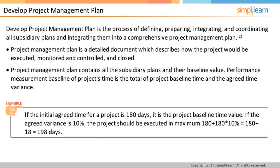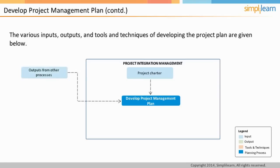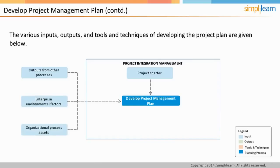Let us look at the inputs considered in developing the project plan. Project charter from the previous process is an important input. The other inputs include output of the other planning processes, because the project management plan is supposed to integrate all of these plans. The examples of other plans are time management plan, cost management plan, and quality management plan. All of these plans are developed over a period as the project progresses. In addition, enterprise environmental factors and organizational process assets are also inputs to developing the project management plan.